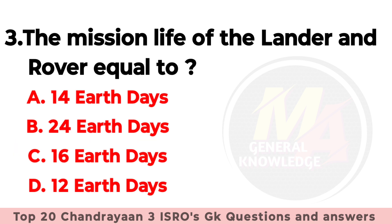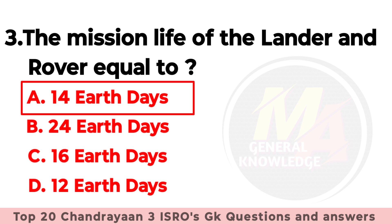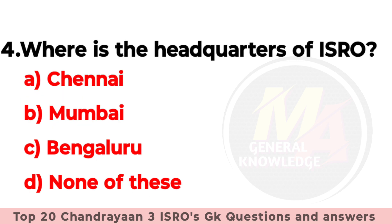Q3: The mission life of the lander and rover is equal to — Option A: 14 Earth Days, Option B: 24 Earth Days, Option C: 16 Earth Days, Option D: 12 Earth Days. The right option is option number A — 14 Earth Days. Q4: Where is the headquarters of ISRO?